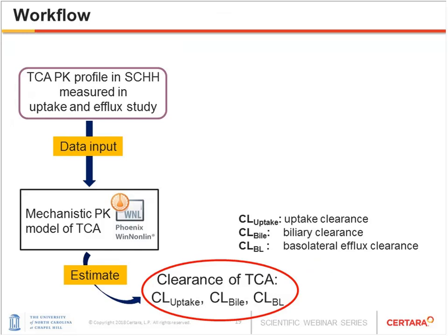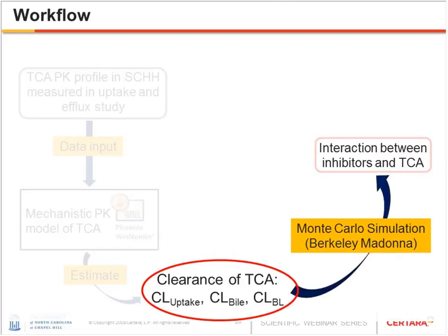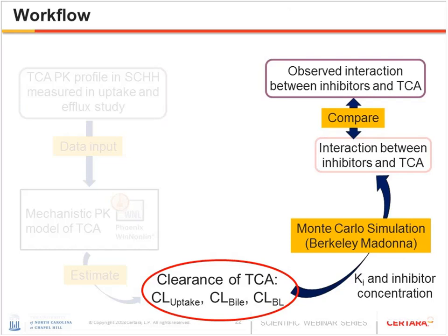Here is the workflow. First, we measure TCA concentration in sandwich-cultured human hepatocytes over time in the uptake and efflux study. These time-course data are used as input for a mechanistic pharmacokinetic model. Using this PK model, we can estimate clearance values of TCA including uptake clearance, biliary clearance, and basolateral efflux clearance. Using these kinetic parameters, we perform Monte Carlo simulation to predict the effect of inhibitors on TCA disposition, then compare predictions with experimental observations.